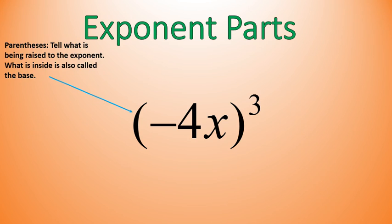First, the parentheses. When there are parentheses around the outside of something, and then it is raised to a power, the parentheses tell us what is being raised to the exponent power. And what is inside is commonly known as the base. This is our base, negative 4x, and we would say that's raised to the power of, in this case, 3.